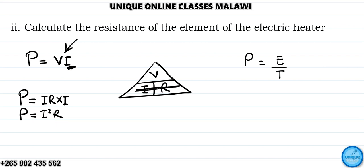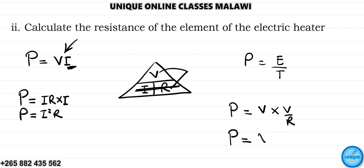We can also express power in terms of voltage and resistance. Power is equal to voltage squared over R. So we have two formulas we can use: P = I²R or P = V²/R.